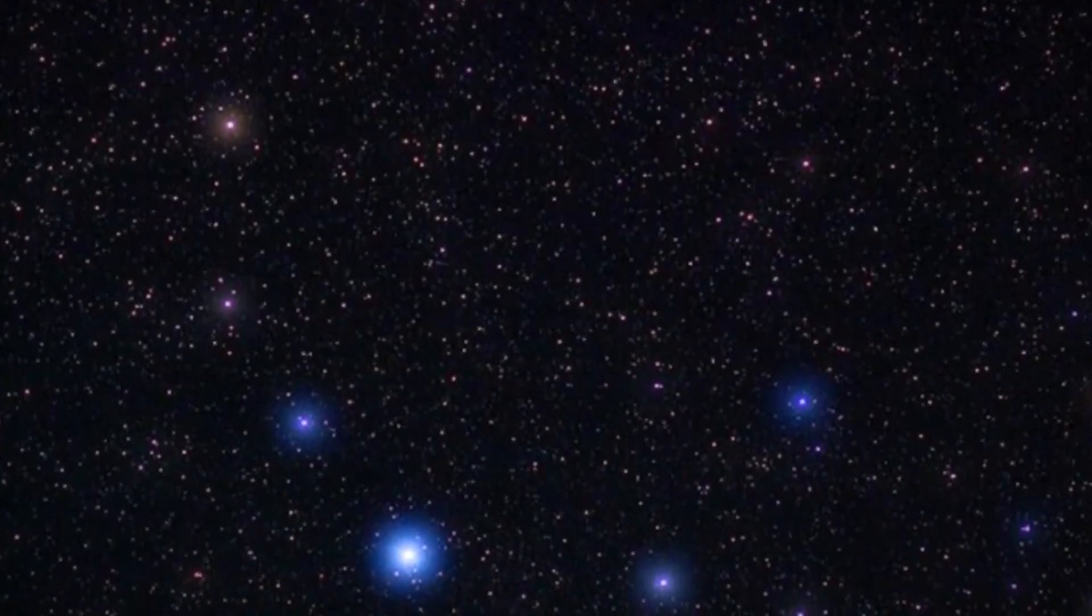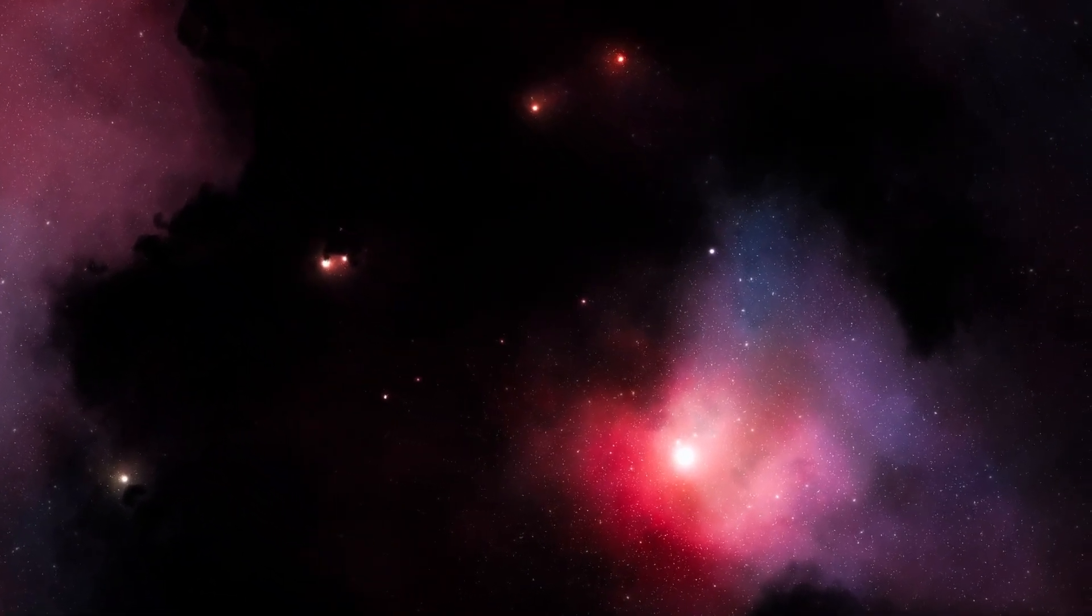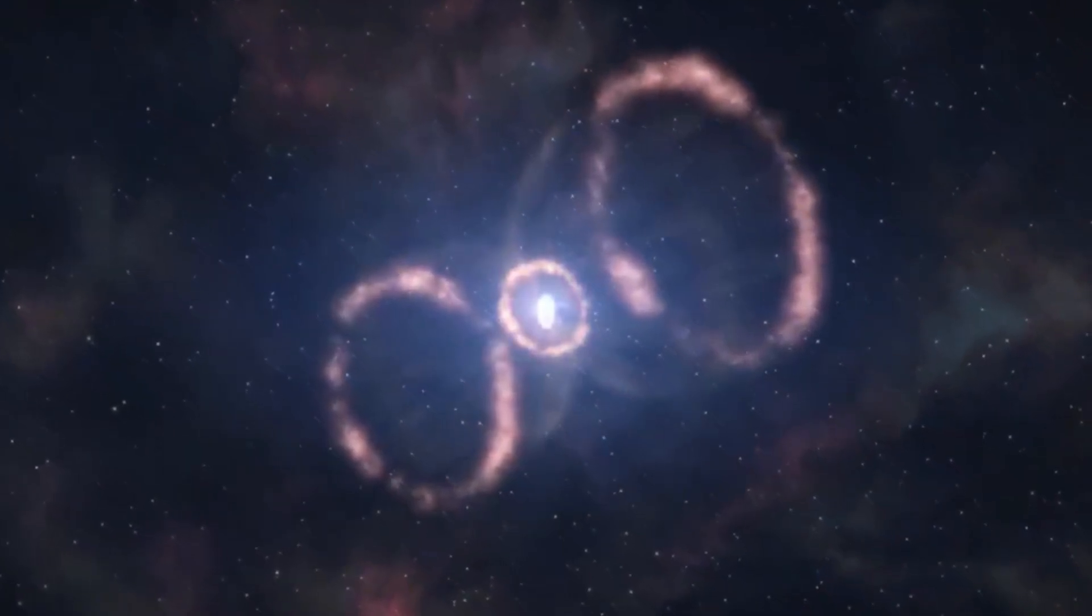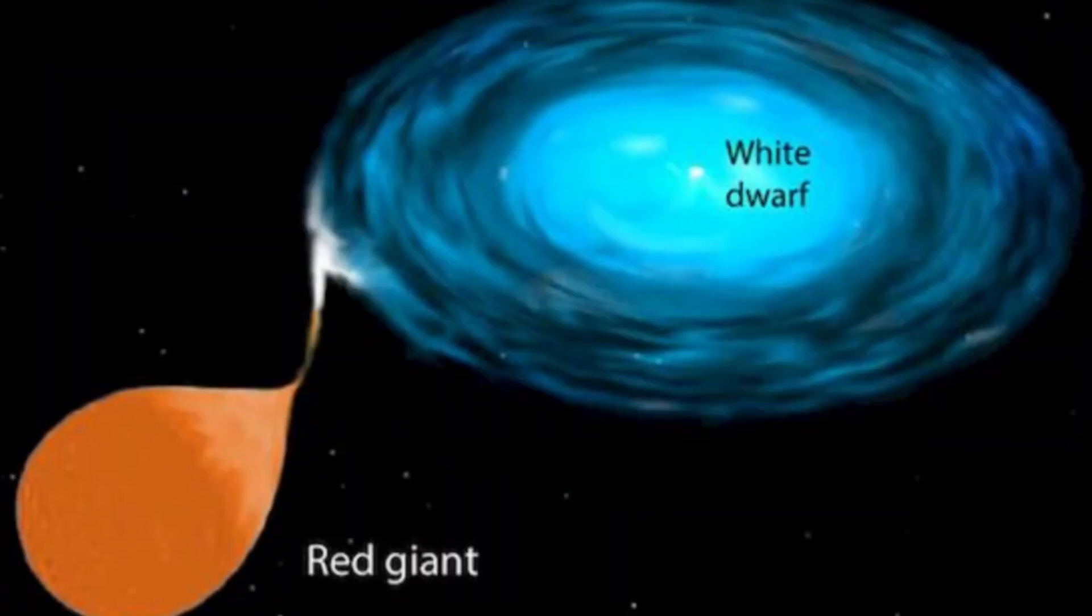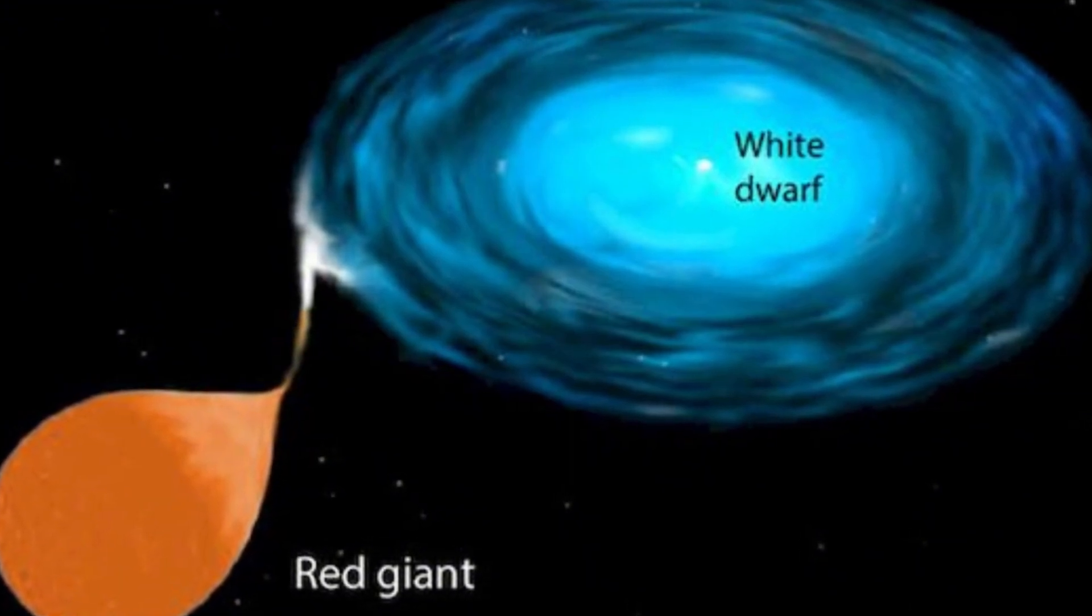T Coronae Borealis is a recurring nova. This means it temporarily and periodically becomes thousands of times brighter. It's a fascinating binary system, meaning it consists of two stars orbiting around each other. And for T Coronae Borealis, the binary system comprises a white dwarf and a red giant.